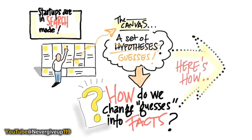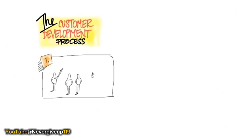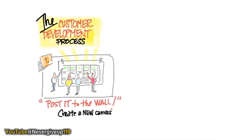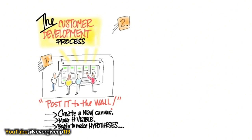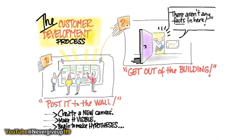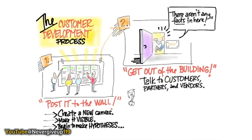The question is: how do we change those guesses into facts? One of the really interesting developments in this class is the customer development process. You start with your business model canvas hypotheses, blow up the canvas, post it to the wall, and use yellow stickies - no pens or pencils allowed, because you're going to get most of them wrong. You make it visible, construct your hypotheses, and then realize there are no facts in this room. So let's get out of the building and talk to customers, partners, and vendors.